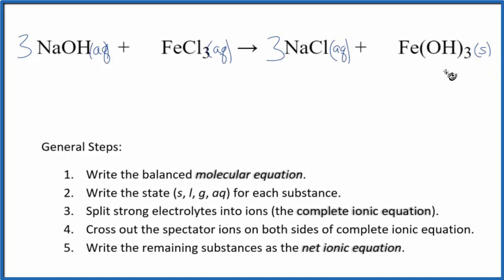And when these compounds react, it'll be a precipitate. It'll fall to the bottom of the test tube. So we have the states. Now we can split the strong electrolytes into their ions. This will be the complete ionic equation.